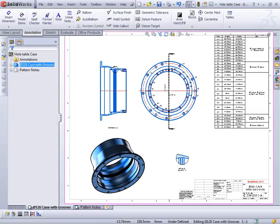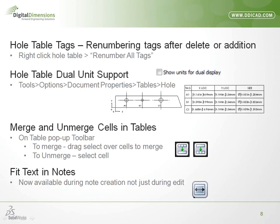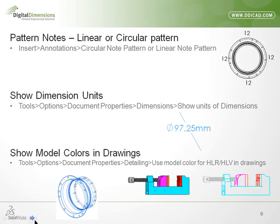We've got the ability of patterning notes in linear or circular patterns. This speeds up placing additional notes. It doesn't update the information automatically — if I started a note at the top, patterned it in a circular pattern by grabbing an edge, it does the circular pattern. But I would still need to modify each note. Once you drop them, they're just regular notes and you can't update the pattern itself — you'd have to re-pattern if you got the quantity wrong.